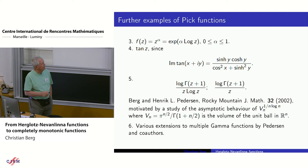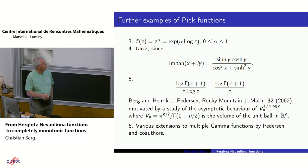Why consider such gamma-function expressions? Because the volume of the unit ball in Euclidean n-space is given by this quantity, and there was a lot of work on the asymptotic behavior of this expression, which could be done using Pick functions. Henrik Pedersen and some co-authors replaced these with more elaborate gamma functions of higher order — I will not go into what that is, but maybe he will tell about it.